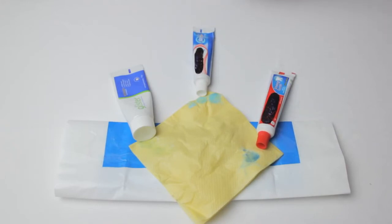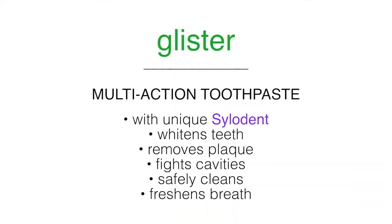The unique enamel-safe Sylodent in Glister cleans the stains of coffee, tea, and tobacco from the teeth and polishes them without harming the natural color. That means whitening without bleaching. It has been tested and certified by Leading Oral Health Institute of USA.